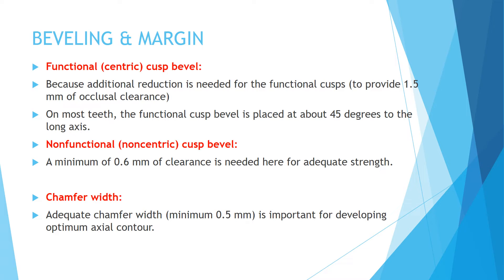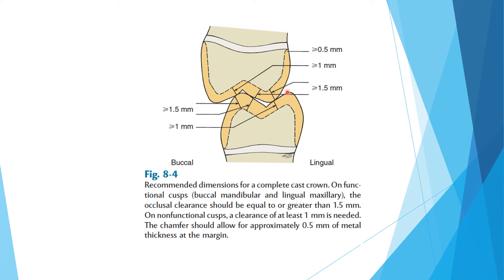Regarding beveling and margins: the functional cusp bevel requires at least 1.5 mm of occlusal clearance, beveled at 45 degrees. The non-functional cusp bevel requires a minimum of 0.6 mm clearance for adequate strength. The margin is chamfer configuration at 0.5 mm. The functional cusp is the buccal of the mandibular and the lingual (palatal) of the maxillary — 1.5 mm; non-functional cusp — 1 mm.